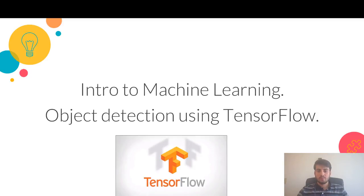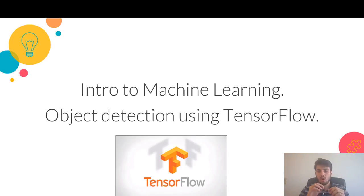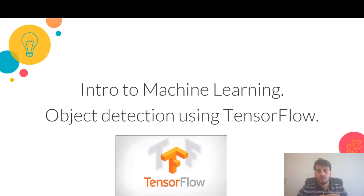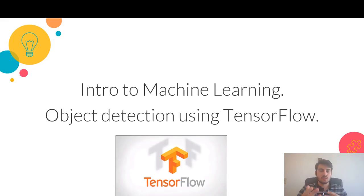Hello everyone and welcome back to another tutorial on machine learning. I'm Sumita Gravar, a software engineer at Archie.ai, and today I will be showing you how you can use a TensorFlow API to detect objects from a live video feed. TensorFlow is a deep learning API created by Google, and it has many built-in machine learning models that you can incorporate in your project and build your own machine learning model to perform various classification and prediction tasks.